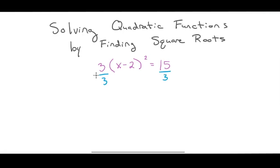That's going to leave me x minus 2 squared equals 5.